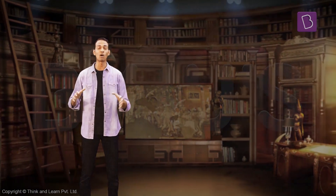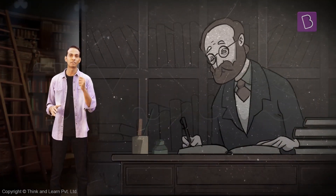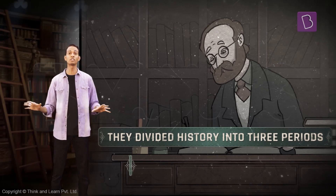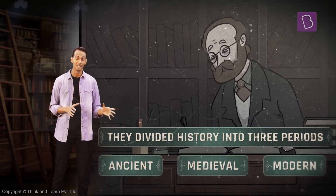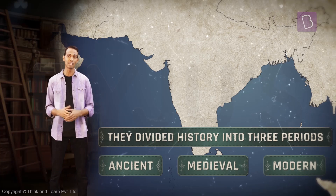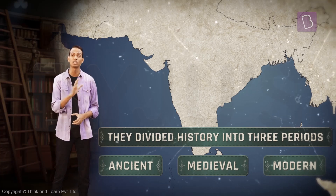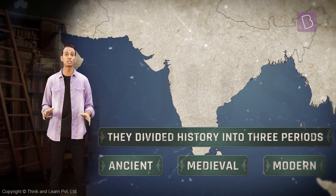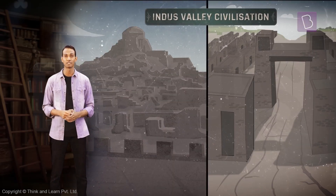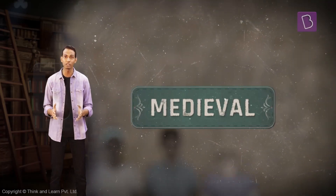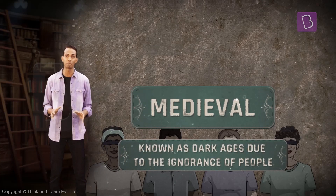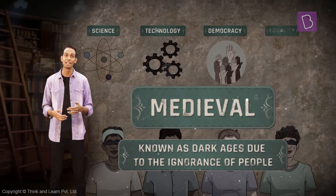Historians came up with a division of history quite different from the one proposed by James Mill. They divided history into three periods: Ancient, Medieval, and Modern. In a lot of ways, these words were associated with the defining features of these ages. Each of these ages brought about changes to society. According to historians, the ancient period referred to the period marking the start of civilizations. The medieval period was often referred to as the Dark Ages due to the ignorance of the people about several topics like science, technology, democracy, and equality.